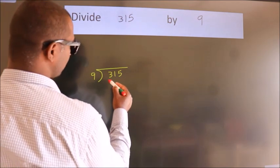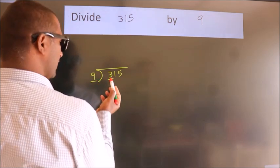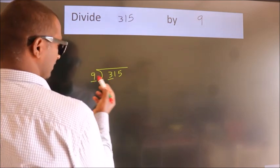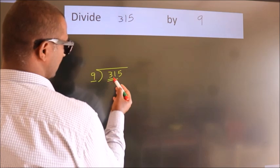here we have 3. Here 9. 3 smaller than 9. So, we should take two numbers. 31.